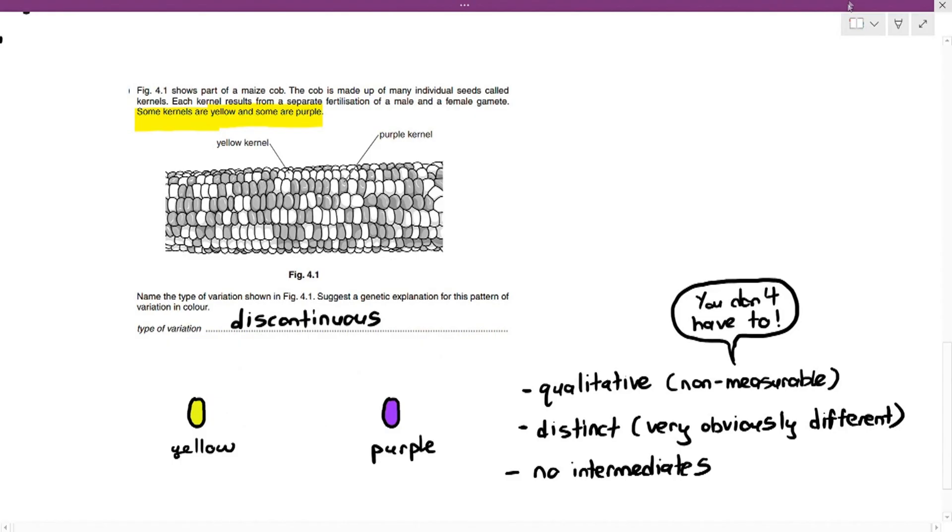Now, suggest a genetic explanation. I did not include that in. But if a question asks you to suggest a genetic explanation for this pattern of variation in color, you just have to say that there is only one gene that affects the kernel color. Number two, you just have to say that the environment, the environment do not affect the color of the kernels. That's good enough. So, I hope you understand the differences between continuous variation and discontinuous variation.